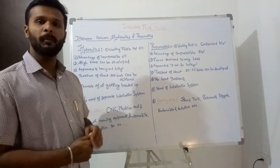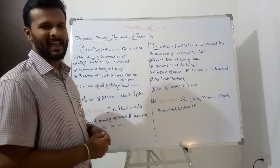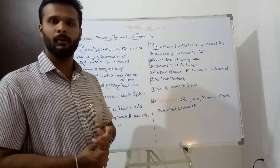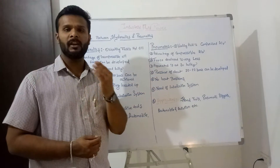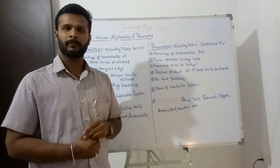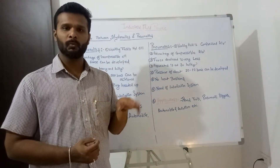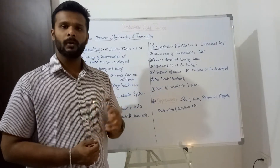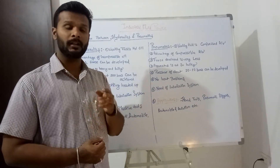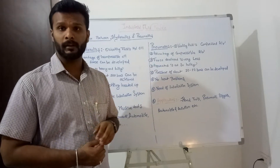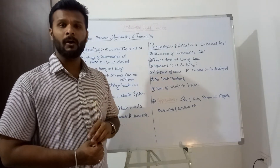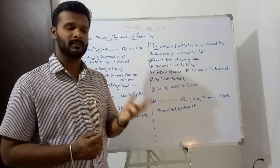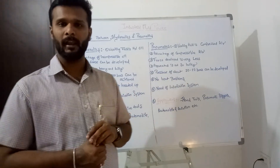The next point is lubrication. In hydraulics, as the medium is oil, there is no need for lubrication. Whereas in pneumatics, air is the moving medium and there are many losses in the system due to friction in the tubes. To compensate for this, a sprinkle of oil is mixed with the air.